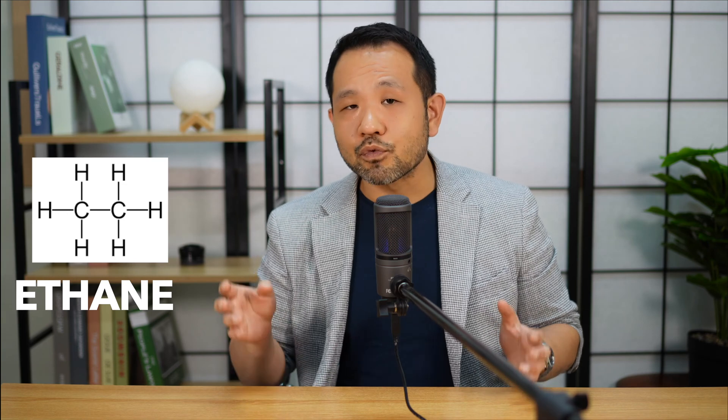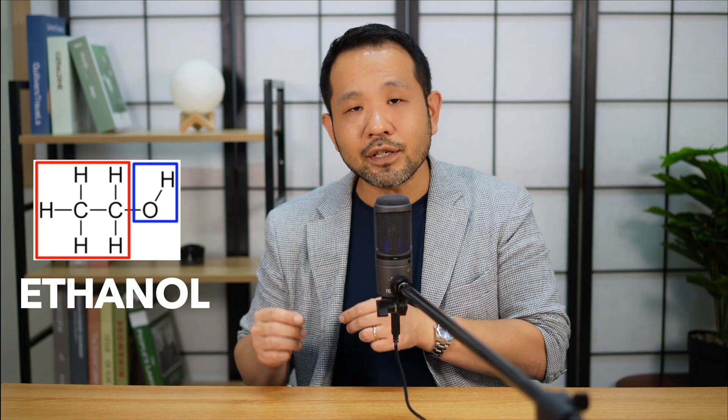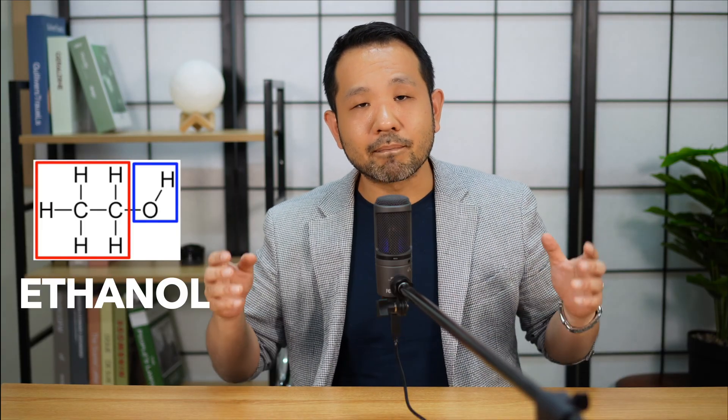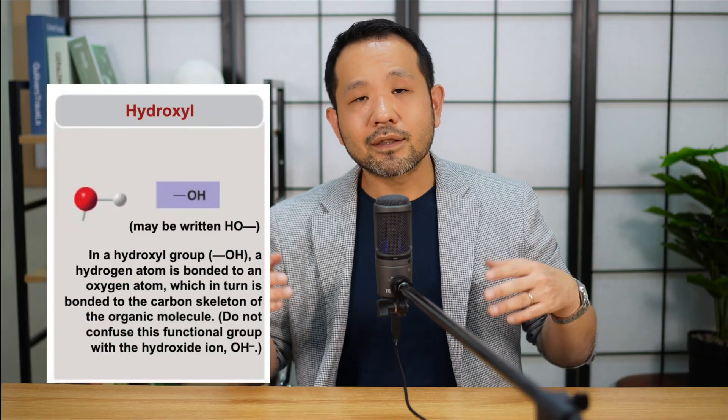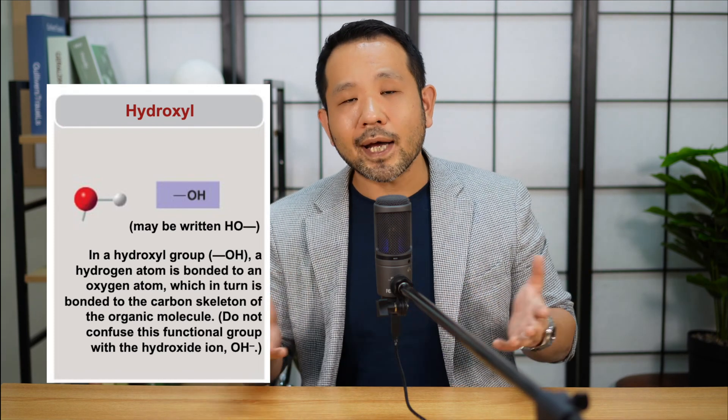Take ethane, for example: it has six hydrogens. If you replace just one of those hydrogens with a hydroxyl group — OH — that hydroxyl group is polar and provides ethanol with polarity, making it dissolvable in water and therefore more interesting for biology. Let's go through the functional groups. The hydroxyl group is OH; the name is fairly obvious — hydroxyl, hydrogen, oxygen. Hydroxyl groups make molecules polar.